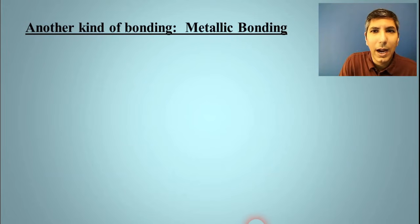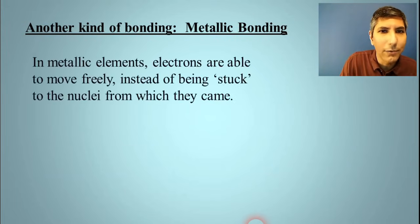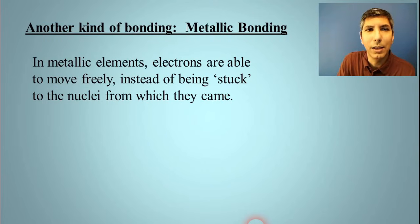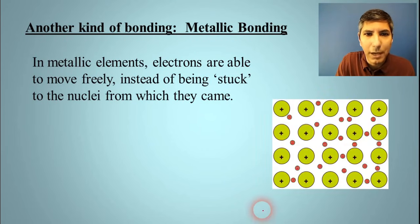Now, we're going to take a look at another kind of bonding, and this is called metallic bonding. And this is what you have when you have a metal, like a chunk of iron or a chunk of gold or an alloy, perhaps, of bronze or steel or something like that. Now, in these metallic elements, in these metals, electrons have quite a bit of freedom of motion. They're able to move fairly freely instead of being stuck to the nucleus from which they came.